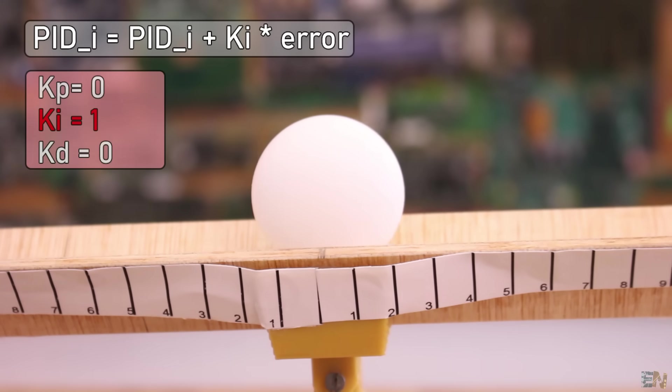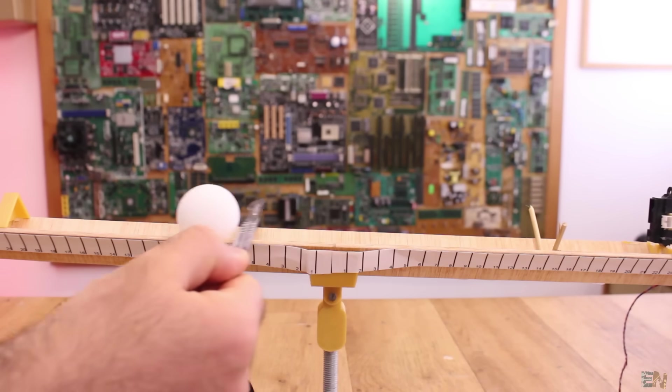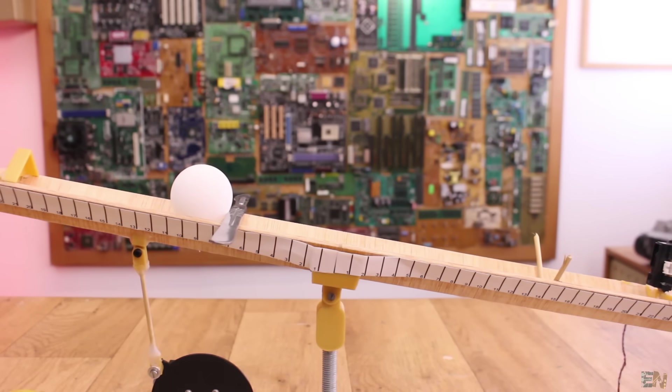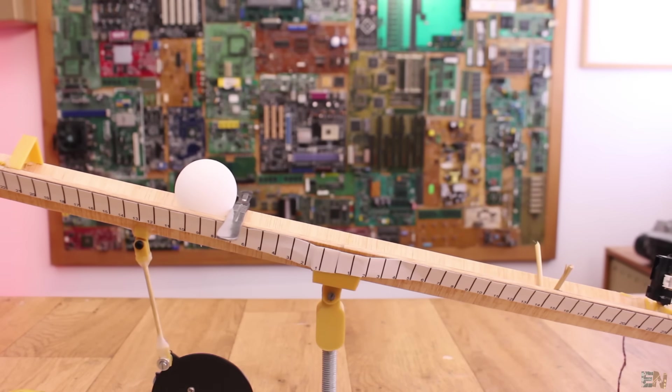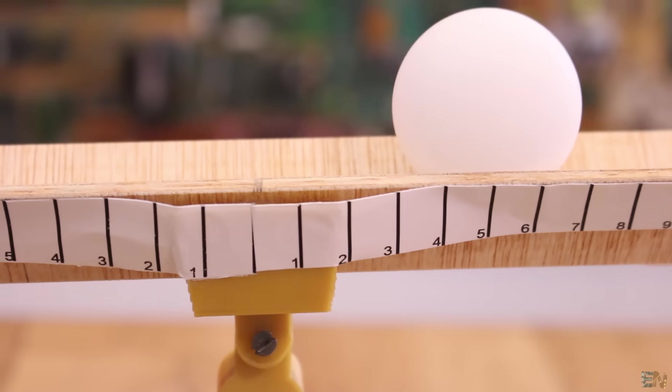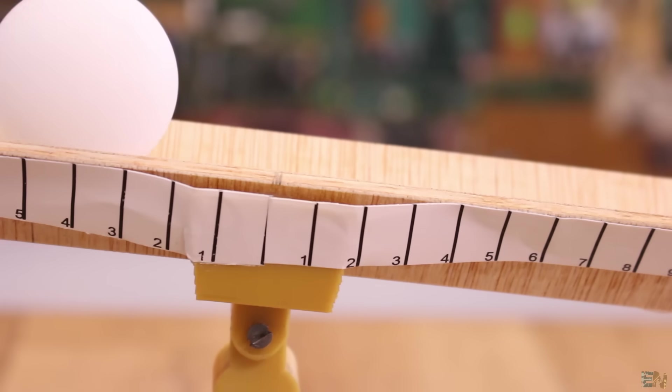To understand better, I set all the constants to 0, but I put the integral to 1. So now I block the ball and let's see the effect. As you can see, the more time passes, the bigger the integral part will get and the more the balance will rotate. So, if the ball gets stuck at, for example, 2 cm, the integral part will slowly increase, till the ball is exactly in the middle.